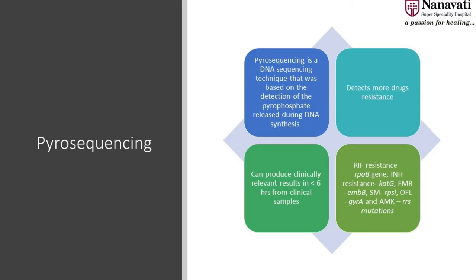Pyrosequencing is another test now available, though not in all labs — done only in a few labs. It is highly sensitive and very expensive, and looks at rifampicin resistance, INH, all possible mutations, and further drug resistance including ethambutol and amikacin. It is not really available for everybody because it is too expensive a test.